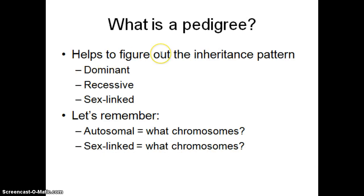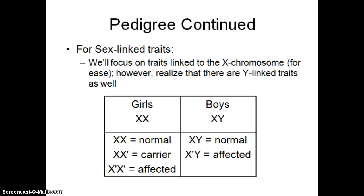Pedigrees can actually help us figure out how things are inherited — are they dominant, recessive, or sex-linked? Remember that sex-linked chromosomes are the X's and Y's, which are chromosome number 23. Autosomal chromosomes are any of the others — chromosomes one through 22. What we worked on in class today was sex-linked traits, and we did a bunch of Punnett squares to help figure out how to do a cross between someone that has a sex-linked trait.